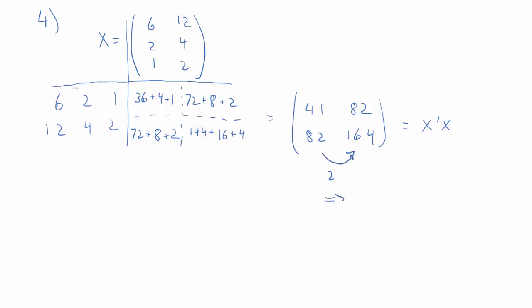So, that's x prime x. And now we can very quickly see that the first column, if we multiply it with 2, we get exactly the second column. So, that means there's a non-trivial solution for lambda 1 and lambda 2. x prime x is singular. Turns out there's only one linearly independent column, resulting also in a zero determinant of x prime x, and x prime x inverse is not defined.